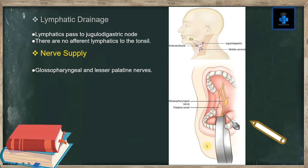Lymphatic drainage: lymphatics pass to the jugulodigastric node. For the palatine tonsil, there are no afferent lymphatics. Nerve supply: the glossopharyngeal and lesser palatine nerves supply or innervate the palatine tonsil.